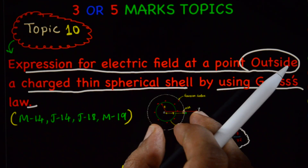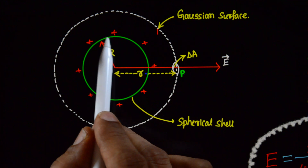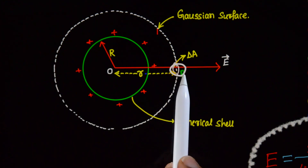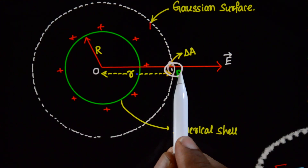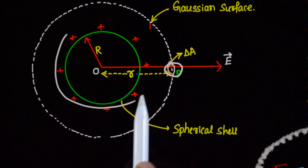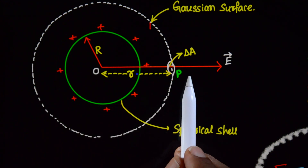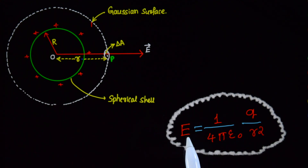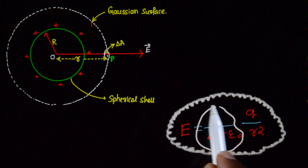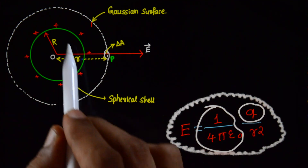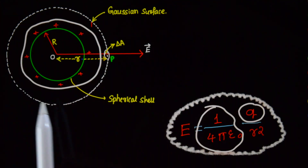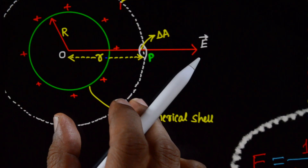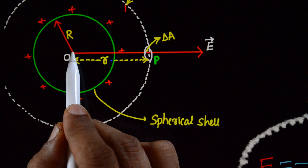Here, this is your thin spherical shell and outside that shell there is a point P. We are going to derive that E is equal to 1 divided by 4πε₀ times Q, where Q is the charge uniformly distributed over the shell, divided by R square.